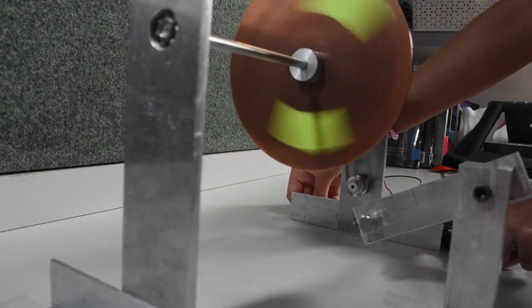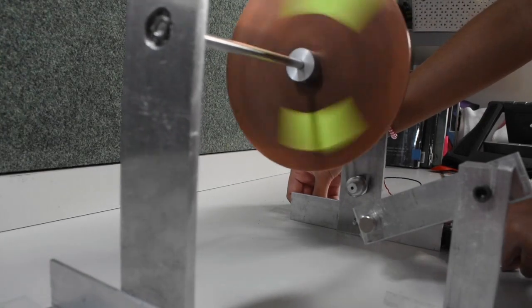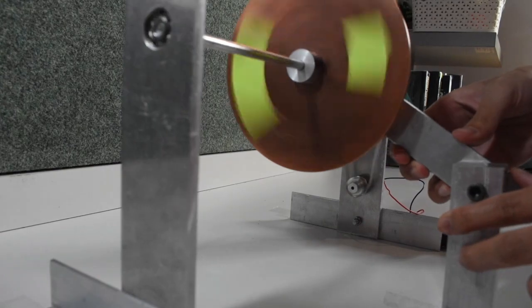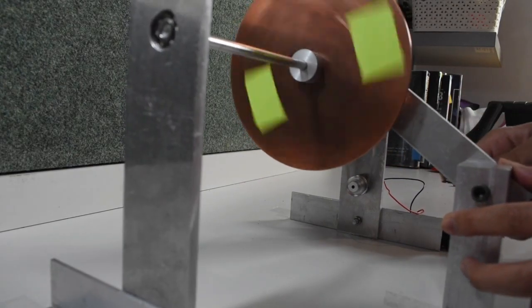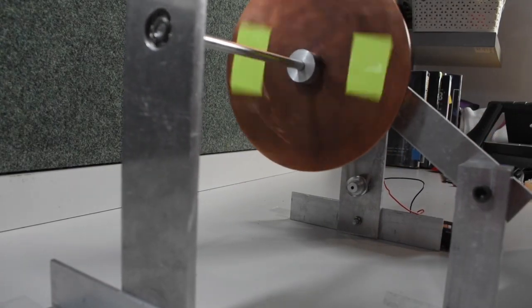We will see it once again. Here we can observe the rapid braking response which causes the wheel to slow down and reach a lower velocity.